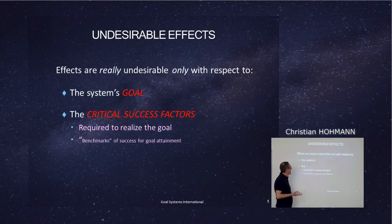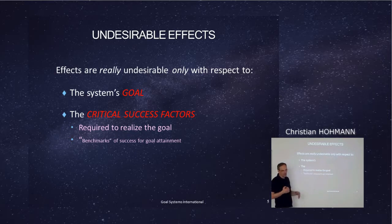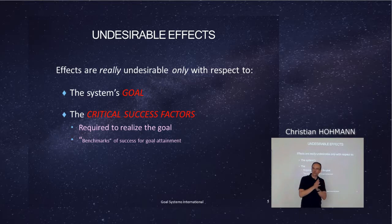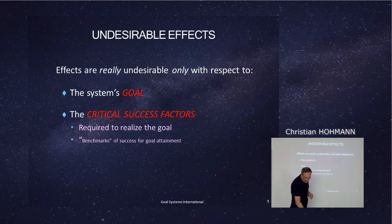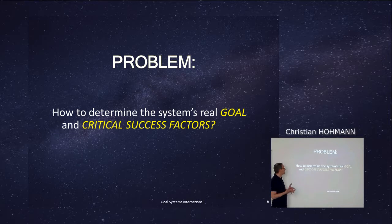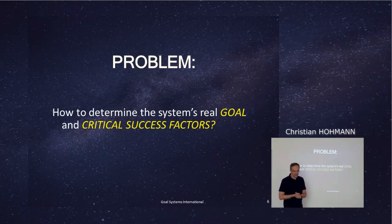Right now, we have an intention, an ambition, a vision to fulfill, something to attain, and of course we are not there now, so we can say we have a problem. To tackle this problem, we have to understand what the goal really is and what the critical success factors are. So how do we determine the system's goal and how to determine the critical success factors?